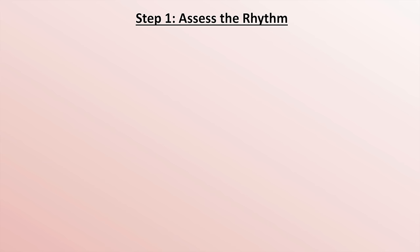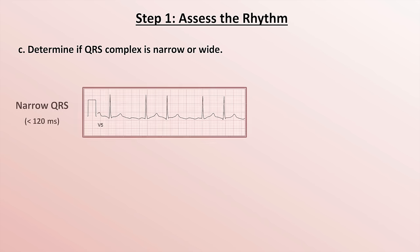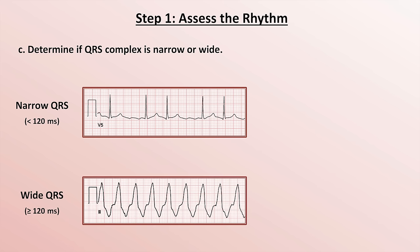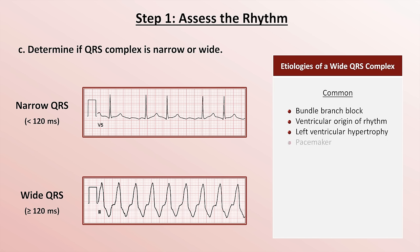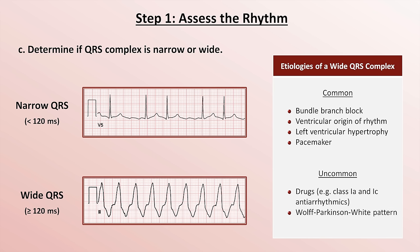After rate and regularity, the next parameter to assess is whether the QRS complex is narrow or wide. A narrow complex is one in which the width is under 120 ms or three small boxes; a wide complex is 120 ms or greater. Common etiologies of a wide complex include bundle branch block, a ventricular origin of the rhythm such as ventricular tachycardia, left ventricular hypertrophy, and a pacemaker. Uncommon etiologies include class 1a and 1c antiarrhythmics, the Wolff-Parkinson-White pattern, and profound hyperkalemia.